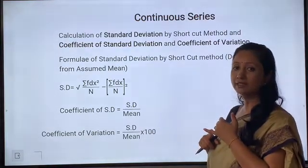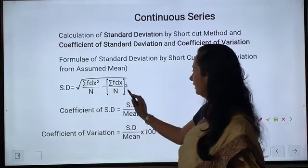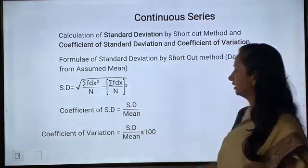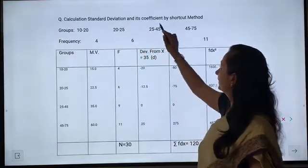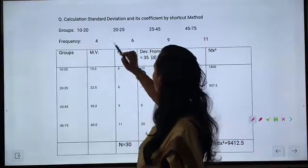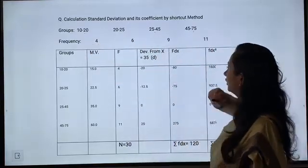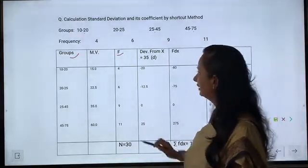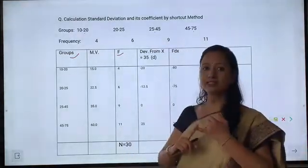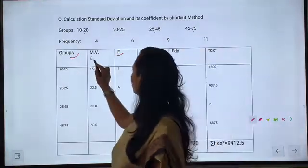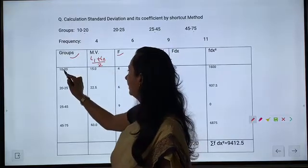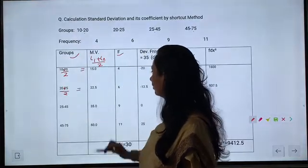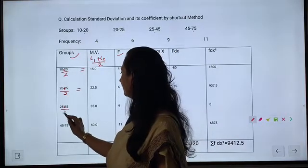Next, for continuous series the same formula applies: SD = square root of [sum of fdx² / n minus (sum of fdx / n) whole squared]. The coefficient of SD and coefficient of variation formulas are also the same. Question: Calculate standard deviation and its coefficient by shortcut method. Groups are 10–20, 20–25, 25–45, 45–75 with frequencies 4, 6, 9, 11. In continuous series we must first calculate mid values: mid value = (L1 + L2) / 2.